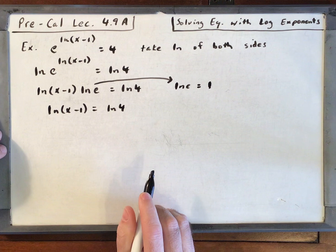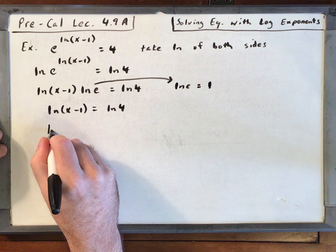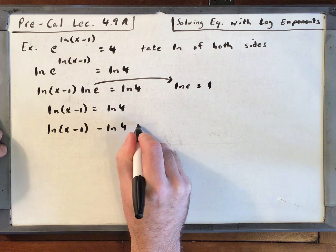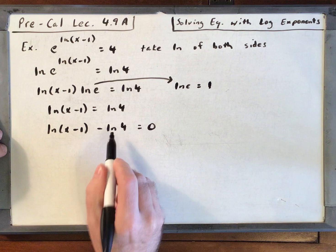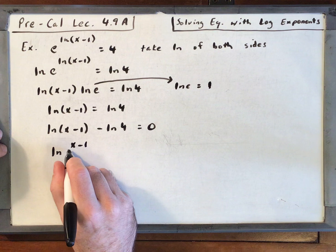Let's bring these logs together on the same side. We'd have the natural log of x minus 1 minus the natural log of 4 is equal to 0. Now let's use the properties of logs to make a single log unit. Since it's minus, I've got division. So natural log of x minus 1 over 4 equals 0.